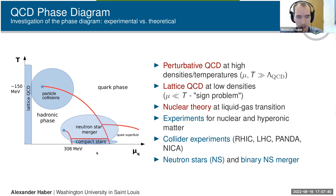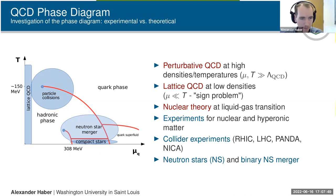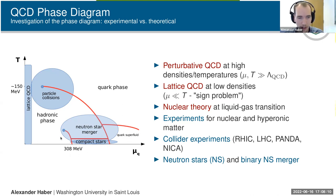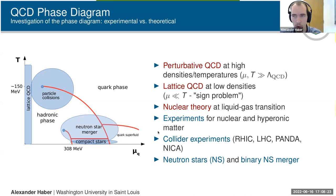More interesting for us are neutron stars or compact stars. Compact stars are really cold — temperatures in the keV range, basically zero on the MeV scale. Neutron star mergers probe the same high densities but go up to way higher temperatures. That's a new parameter space we can probe with neutron star mergers compared to ordinary isolated cold neutron stars.